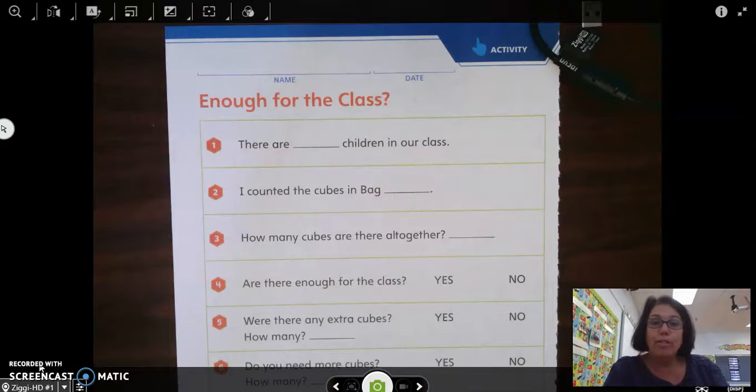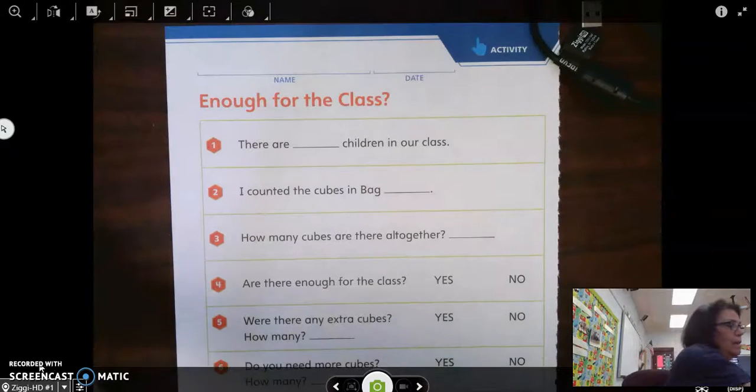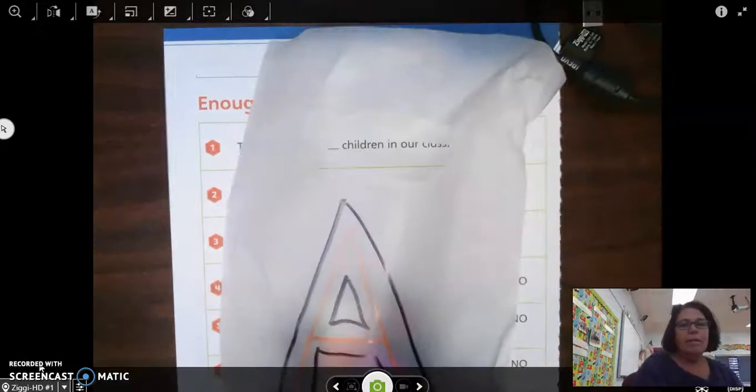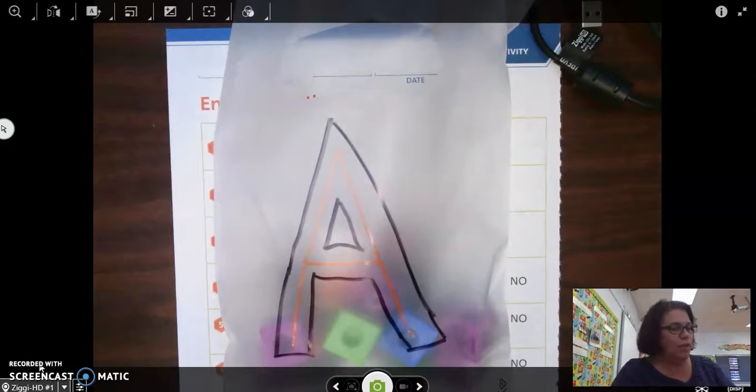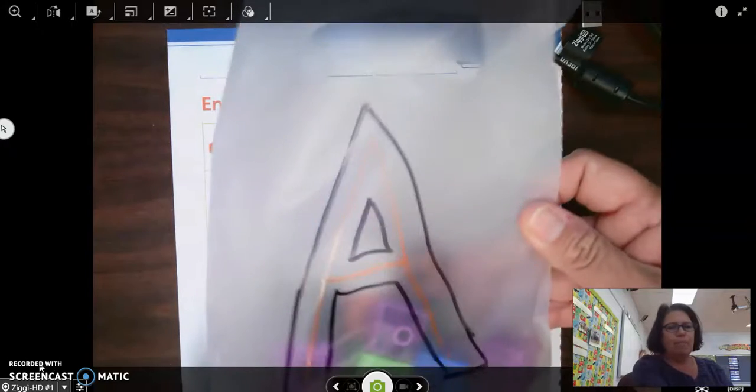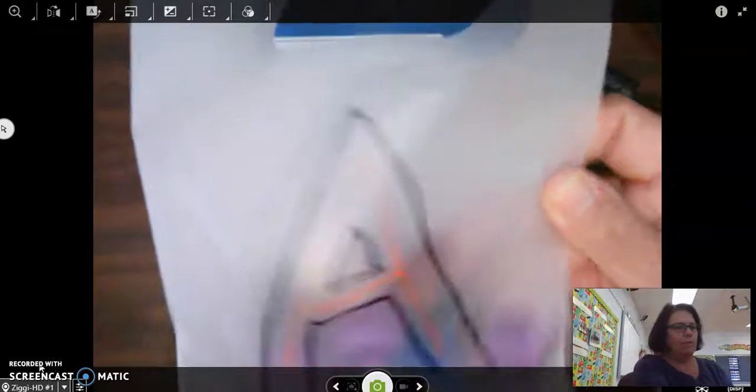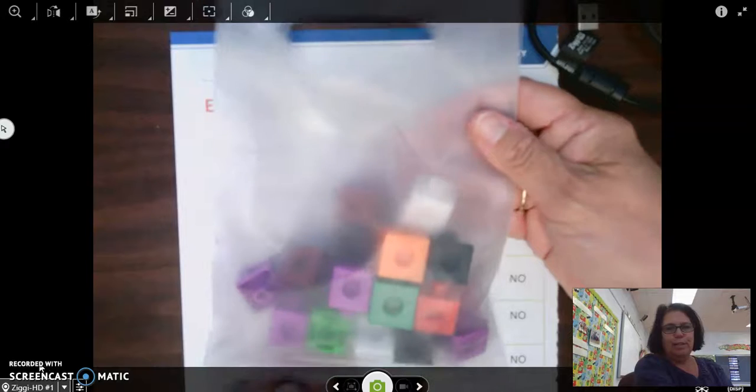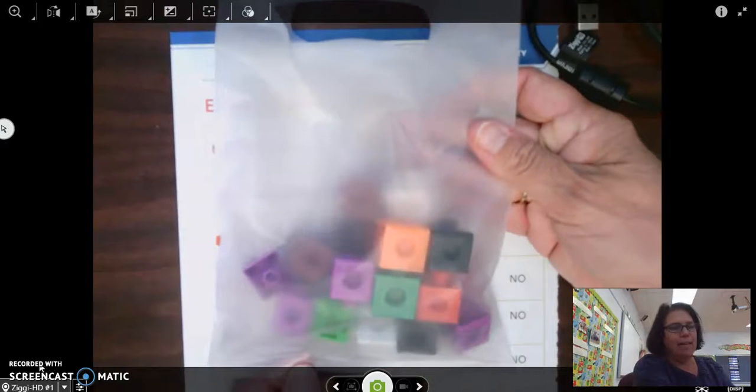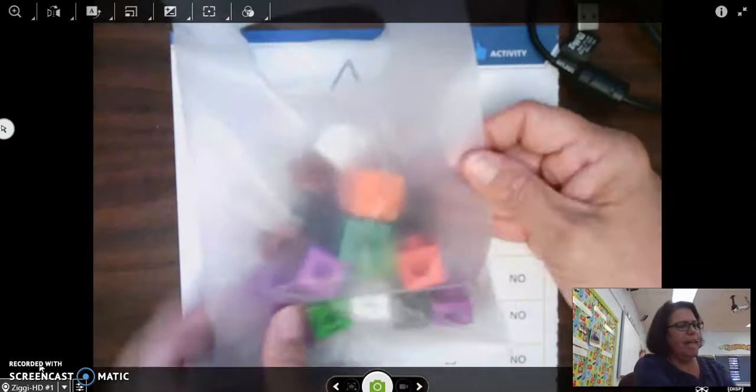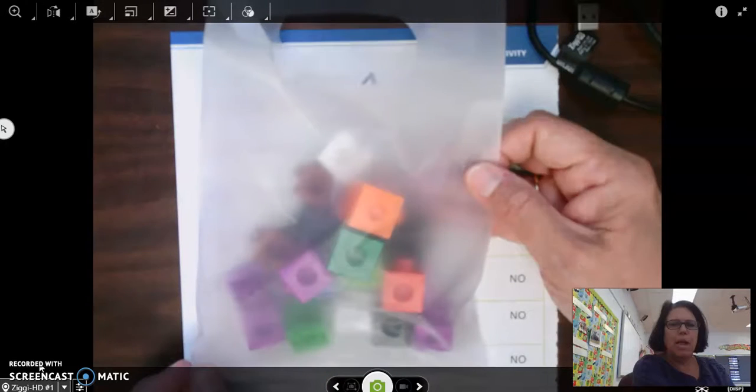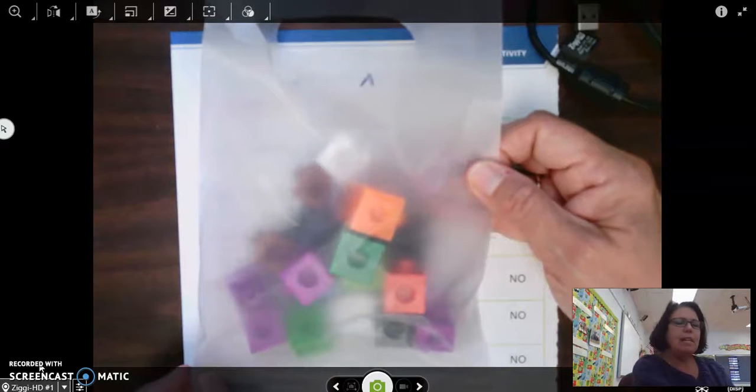Now what we're going to do is take a look at this bag, Bag A, and Bag A is filled with blocks. So I want you to take just a quick look at Bag A. Look at the front and flip it over, look at the back of Bag A. And think to yourself, is that going to be enough blocks for everyone in the class to have one block?